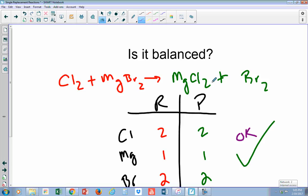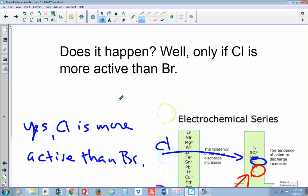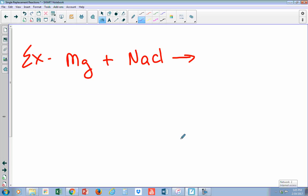But here's our big question. Does it happen? If it were to happen, chlorine would have to be more active than bromine. Let's take a look at our series again. Chlorine would have to be more active. So chlorine is over here and bromine is down here, and you can see chlorine is above bromine. So yeah, it is more active than bromine. That reaction does happen also. And let's go ahead and do one more.